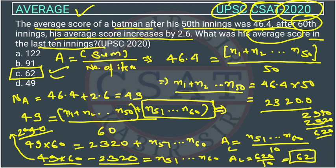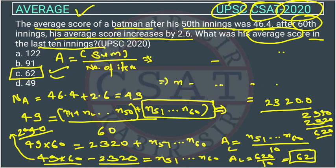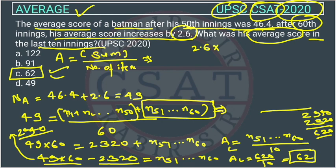There are other methods to solve this and we will discuss those concepts in class. Here is a short second method. The average score increased by 2.6, and this increase of 2.6 applies to all 60 innings. So the total extra runs contributed = 2.6 × 60.